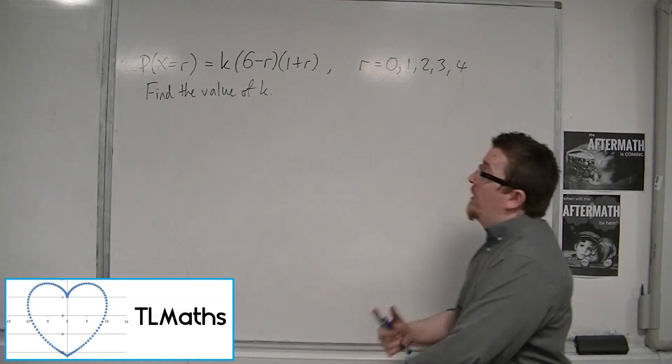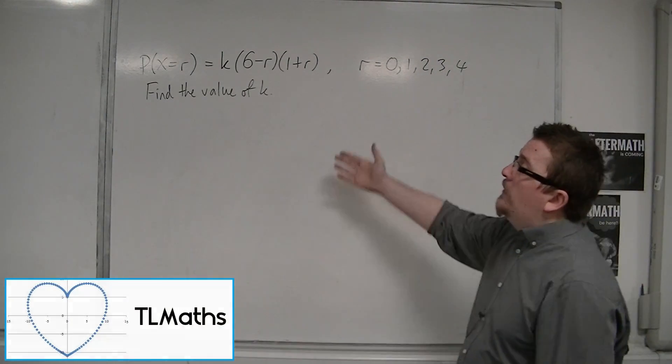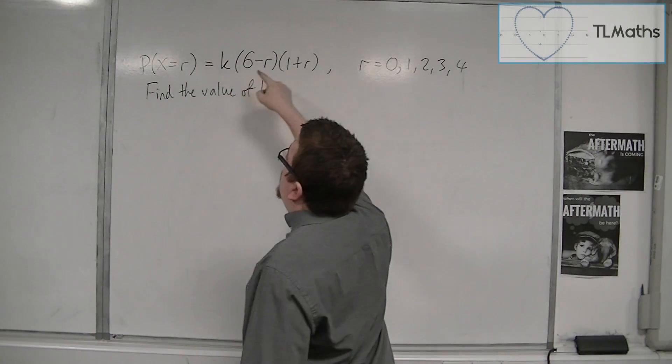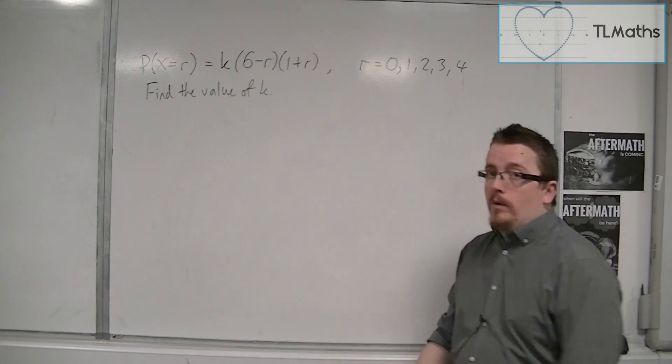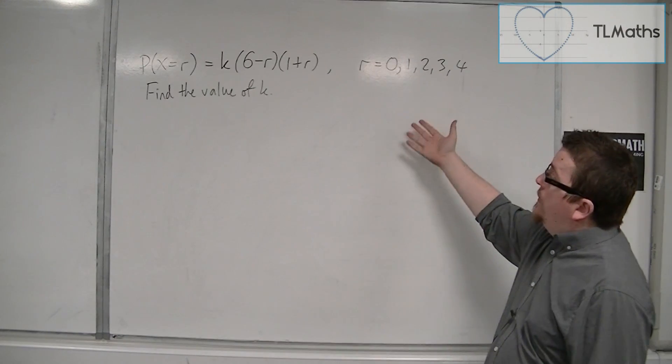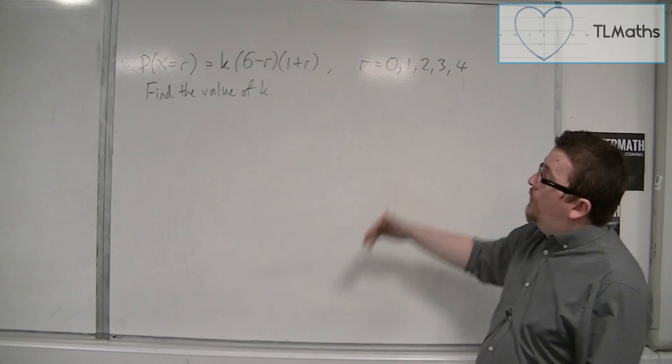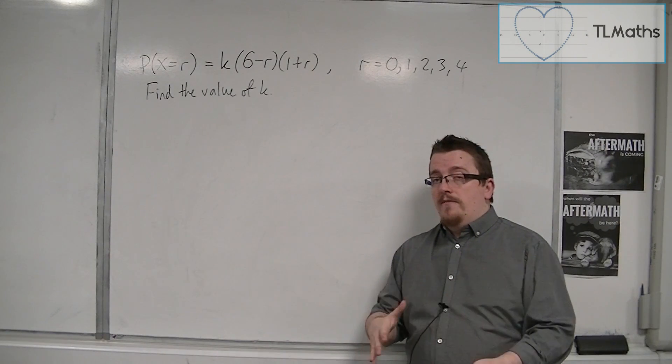In this video, we've got an algebraic function. The probability of x being equal to r is k times (6 minus r) times (1 plus r). And we're told that r goes from 0 to 4: 0, 1, 2, 3, and 4. We need to find the value of k.